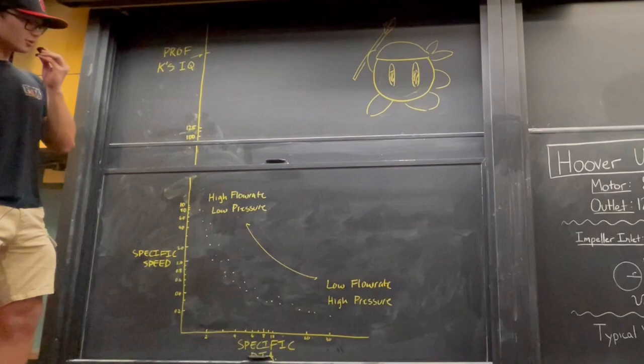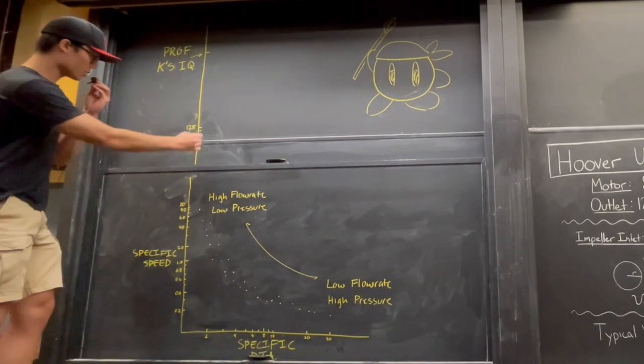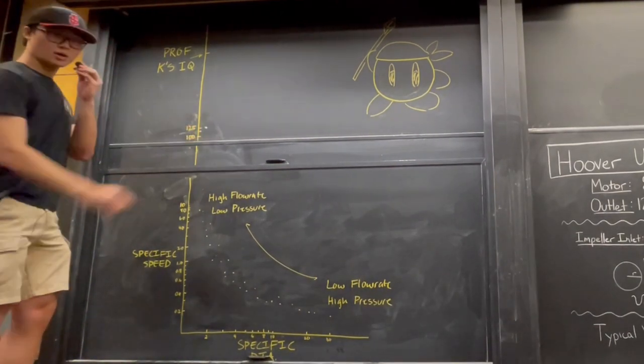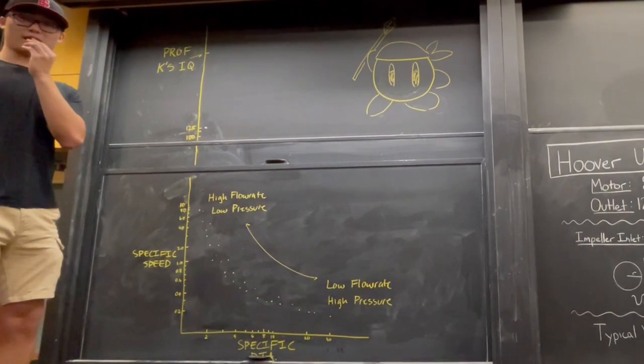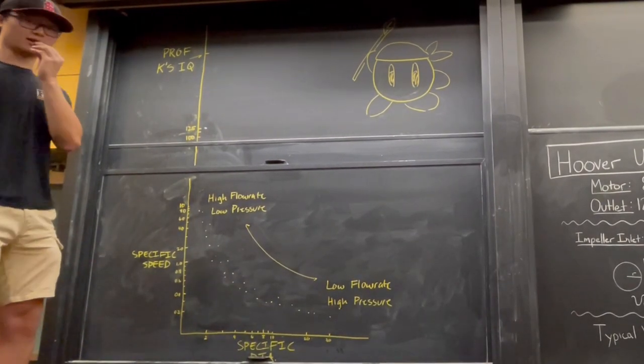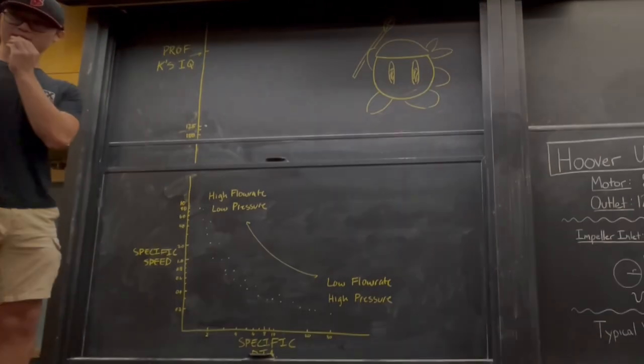On the actual chart, our pump goes somewhere around here, which suggests that our pump, despite being a radial pump, is actually designed for high flow rates.